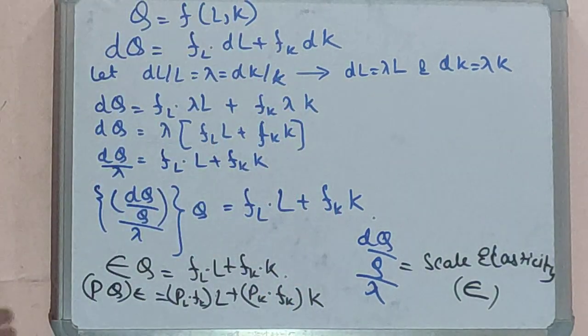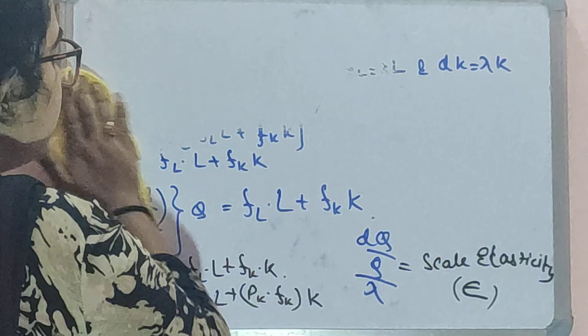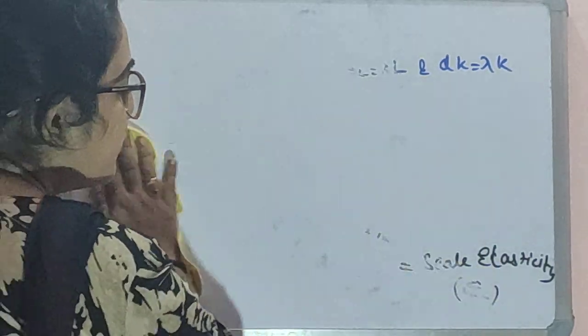Now I will be showing you through graphs the product exhaustion theorem. First, you need to know that the product exhaustion theorem is mainly for constant returns to scale, where LAC equals LMC, and where SAC equals SMC. This is constant returns to scale where ε = 1.